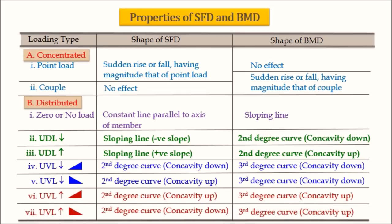Two important points to recall: first, the point of zero shear — whenever shear is zero, the bending moment has a peak value, because dM/dx equals V, so when V equals zero the bending moment is at an extremum. Second, the point of contraflexure — the point where bending moment is zero and changes sign from sagging to hogging or vice versa.